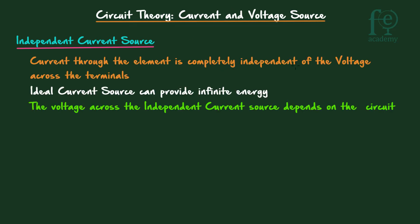Now look at the independent current source. The current through an element is completely independent of the voltage across the terminal — that is the definition. If we measure the current, it is independent of the voltage, so the voltage can be any value up to infinity. Since P equals V times I, and we are concerned only about the current, the voltage can go to infinity. Therefore, an ideal current source can also provide infinite energy — this is a theoretical concept.